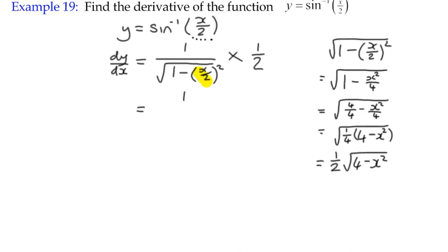So feeding it back in here, our denominator has now become a half times the square root of 4 minus x squared, still multiplied by a half. Well, that's the same as basically saying multiplying the denominator by 2.